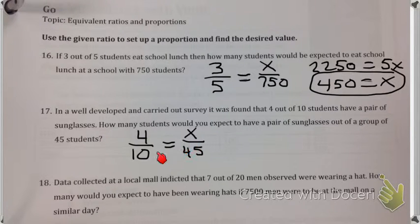To solve a proportion, we cross-multiply. So 4 times 45—I don't know what that is, but 2 times 45 is 90. If I double it, that's going to be 180. So 4 times 45 is 180 equals 10x.